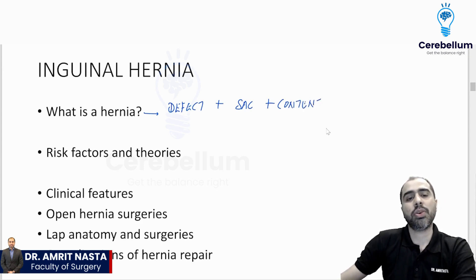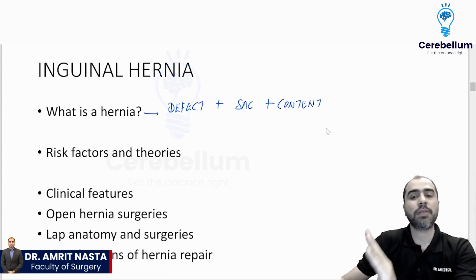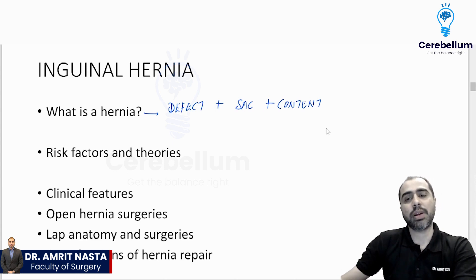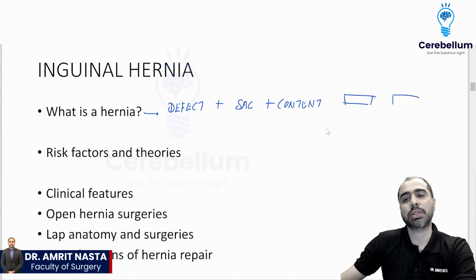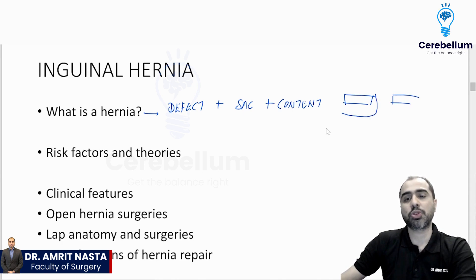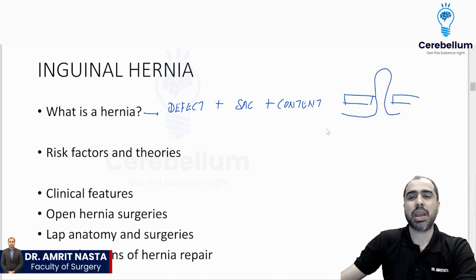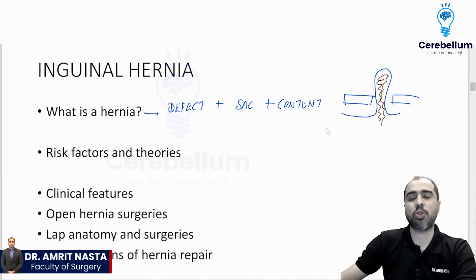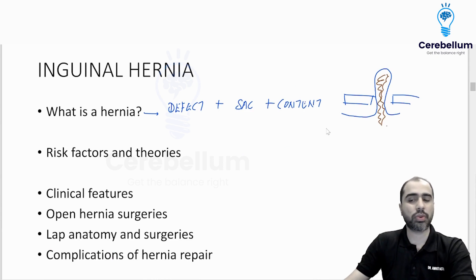Whenever you think of a hernia, think of it like this: there should be a hole in the muscle or a hole in the aponeurosis. Behind the aponeurosis is the peritoneum, which should bulge out — that is the sac — and inside the sac there should be some content. The content can be intestine, omentum, and so on and so forth.